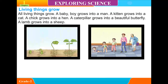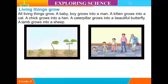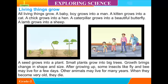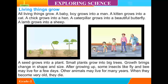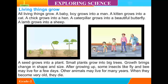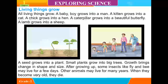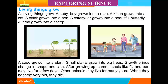Living things grow. All living things grow. A baby boy grows into a man. A kitten grows into a cat. A chick grows into a hen. A caterpillar grows into a beautiful butterfly. A lamb grows into a sheep. A seed grows into a plant, and small plants grow into big trees. Growth brings change in shape and size. After growing up, some insects like flies and bees may live for only a few days, while other animals may live for many years. When they become very old, they die.